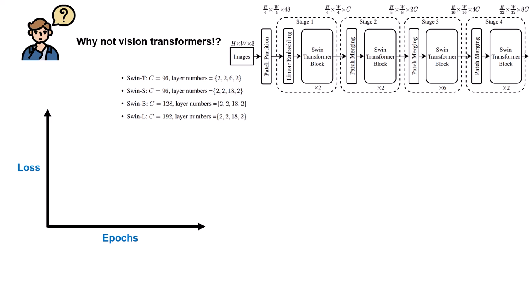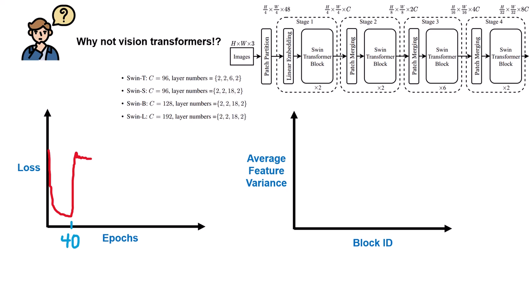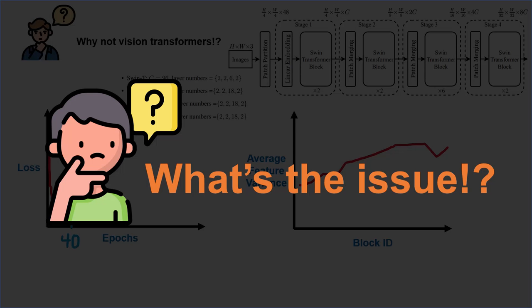If you look at the loss curvature over different epochs, you can see that it increases until around epoch 40, but then it becomes unstable. The authors of Swin Transformer wanted to realize what the issue was, and they plotted a figure where the y-axis is average feature variance and the x-axis is block ID. We can see the pattern that as we go deeper in the neural network, the average feature variance increases until it becomes unstable and we cannot train it anymore.